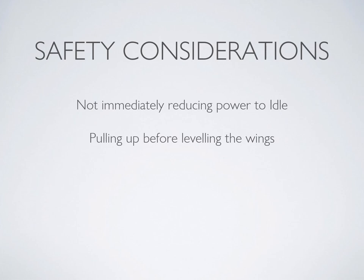One thing to note: you need to immediately reduce power to idle. Make it instinctual so that if you do inadvertently enter a spiral dive, you're going to recover doing that right away. Also, do not pull up before leveling the wings. Remember that this increases wing loading and there's already a good chance you're past the safe maneuvering speed VA for your aircraft. Increasing loading at this point could cause structural damage to the aircraft.